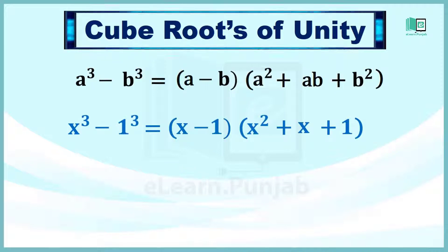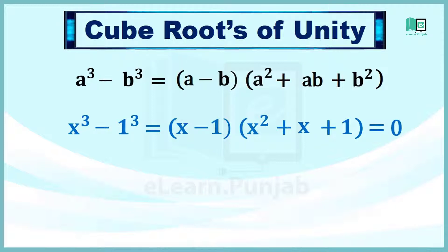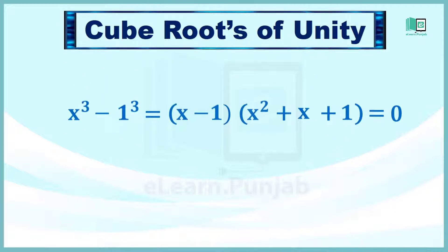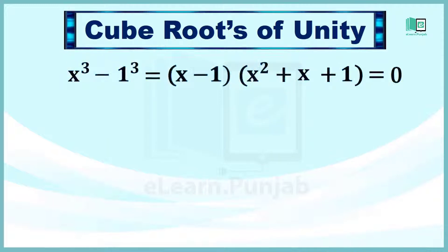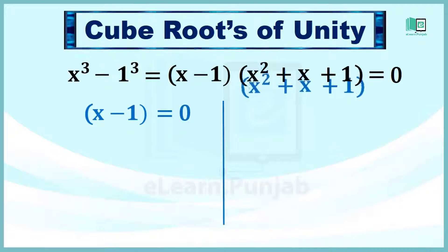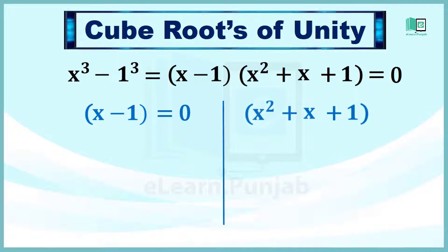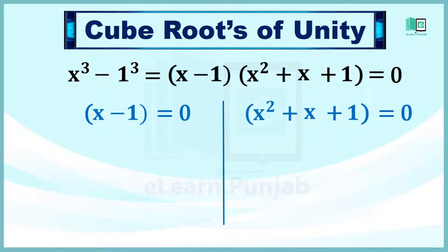इस formula के तहत हम equation को इस तरह लिख सकते हैं: x cube minus 1 cube is equal to x minus 1 into x square plus x plus 1 is equal to 0। यानि इस equation से या तो x minus 1 is equal to 0 होगा, या x square plus x plus 1 is equal to 0 होगा।